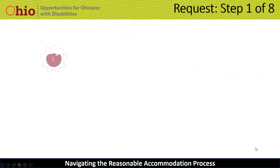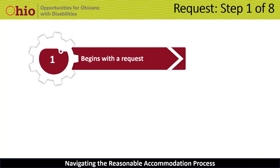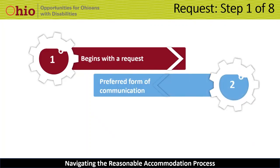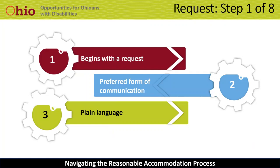Step 1 begins when a request is received for a change in the hiring process or in the workplace from an applicant or an employee. A request may not always be easy to recognize, so it's important to know what constitutes a request. First, a request does not have to be made in writing — the person can request the accommodation in their preferred form of communication, which could be through sending an email or verbally making a request. Second, the person may use plain language, which means the request does not have to reference the ADA or use the term 'reasonable accommodation.' When an applicant or employee communicates a problem with the hiring process or the workplace and relates this to a medical condition, you have just received a request for an accommodation. It can be that simple.